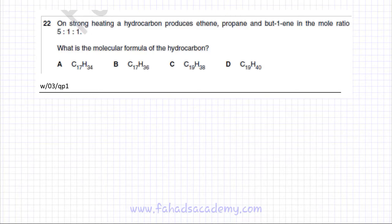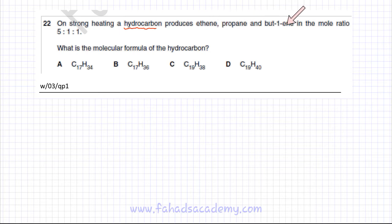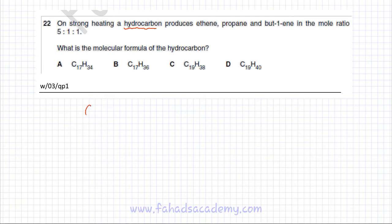The following question is about cracking hydrocarbons. On strong heating, a hydrocarbon produces ethene, propane, and butene in the mole ratio 5:1:1. The question asks for the molecular formula of the hydrocarbon. So we need to figure out what the hydrocarbon is — let's call it CxHy.